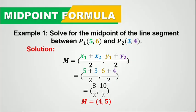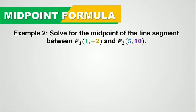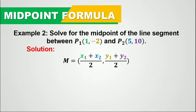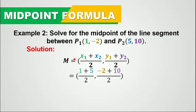Now let's take the second example for you to understand this concept better. Let's solve for the midpoint of the line segment between point 1 whose coordinates are 1 and negative 2, and p2 whose coordinates are 5 and 10. Remember that in a given set of coordinates, the first number on the left side of the parenthesis is the x coordinate, while the number on the right side is the y coordinate.